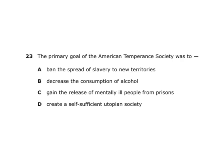The primary goal of the American Temperance Society was to decrease the consumption of alcohol. Write down temperance — anything on the test about temperance relates to the temperance movement, which was people saying you should not be drinking alcohol or should very much limit drinking. The temperance movement also got women very much involved in social reform.